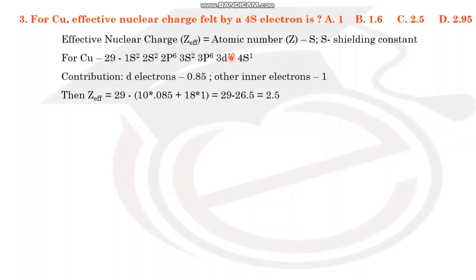In the case of copper, the 3d electrons contribute 0.85 each and the other inner electrons contribute 1 each. The effective nuclear charge equals atomic number minus shielding constant S. So: 29 minus (10 × 0.85 + 18 × 1) = 29 minus (8.5 + 18) = 2.5. The answer is 2.5.